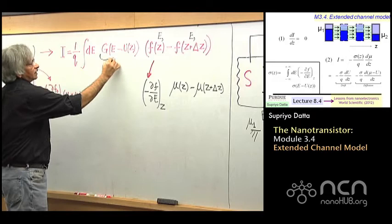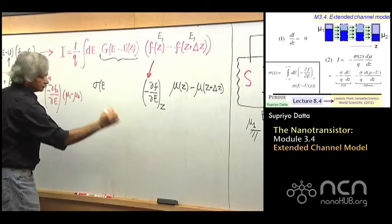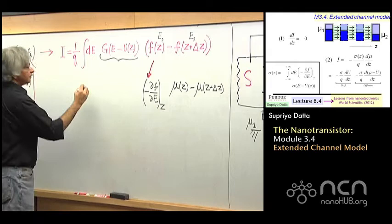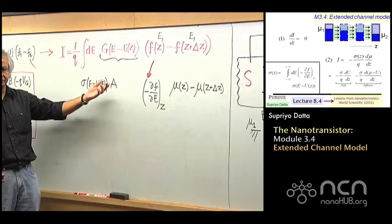Now, this conductance, as we have discussed before, is given by the conductivity times the cross-sectional area A. If it's a two-dimensional conductor, you should use the width W; if it's one-dimensional, you don't need that. But I'm just generally writing A.